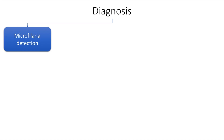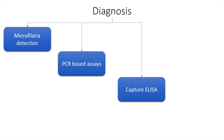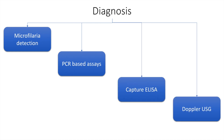The diagnosis of filariasis depends upon microfilariae detection. The blood sample is collected in the middle of the night. PCR-based assays may also be used, as well as capture ELISA and Doppler ultrasound showing the characteristic filarial dance sign.